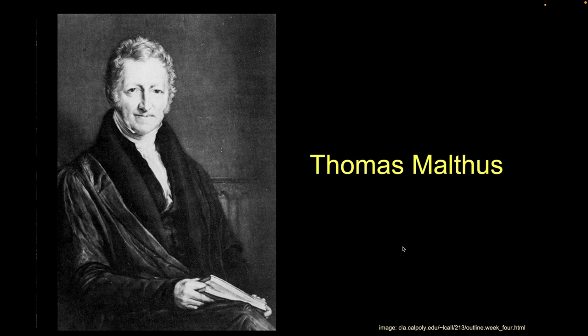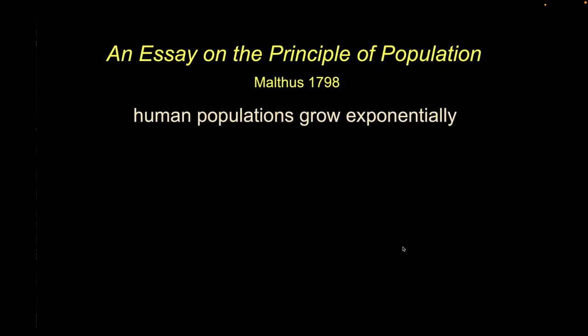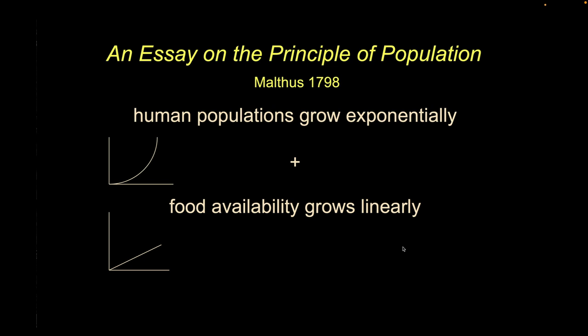One last thinker before Darwin: Thomas Malthus. In 1798 he wrote a highly influential essay called 'An Essay on the Principles of Population.' He basically said humans grow exponentially in terms of our ability to make offspring, while our ability to make food increases more slowly — historically growing linearly. When those two things combine, the number of mouths to feed will outstrip the food supply, and population will be controlled by disease, starvation, conflict, and war.